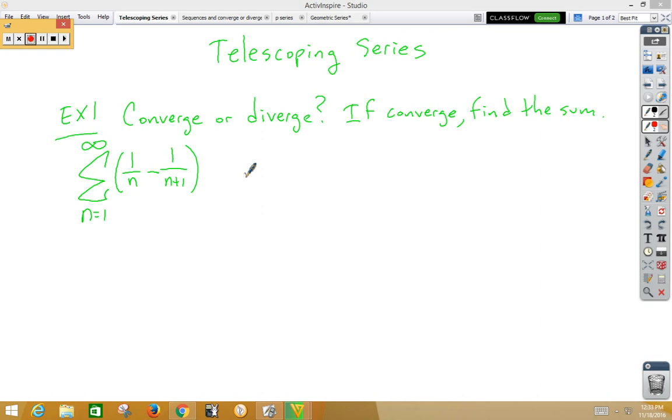The directions say converge or diverge; if it converges, find the sum. We notice right away that we have a couple of fractions and a subtraction sign, which makes us think this might be a telescoping series.